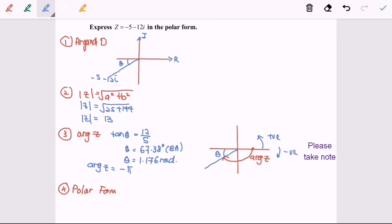So this is what we call negative pi plus theta. Because from here until this part, we can consider as negative pi. So we have to reverse. That's why we need to add on the value theta. So negative pi plus 1.176. So the argument of Z will be negative 1.9656 radians.